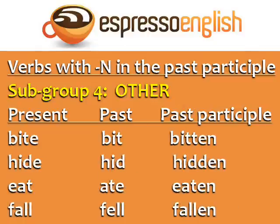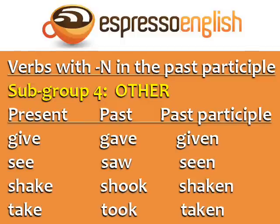Subgroup four — other. These verbs have N in the past participle but don't appear to follow any other pattern. Bite, bit, bitten. Hide, hid, hidden. Eat, ate, eaten. Fall, fell, fallen. Give, gave, given. See, saw, seen. Shake, shook, shaken. Take, took, taken.